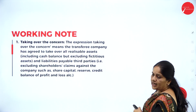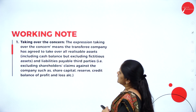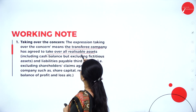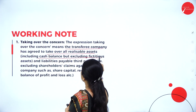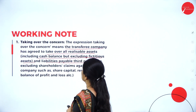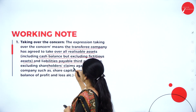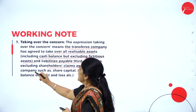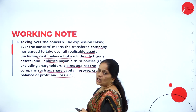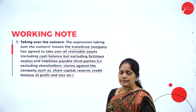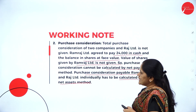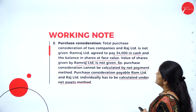A working note clarifies that the expression 'taking over the concern' means the transferring company has agreed to take over all realizable assets including cash balance, but excluding fictitious assets and liabilities payable to third parties — that is, excluding shareholders' claims such as share capital, reserves, and credit balance of profit and loss account. So when we say liabilities, it always means liabilities to outsiders.